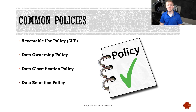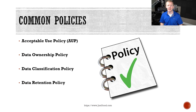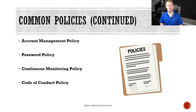Here are some common security policies you might see. The acceptable use policy, or AUP, defines permissible use of networks and systems. The data ownership policy states who owns what information. The data classification policy describes the classification structure, which relates to how certain data is protected — for instance, proprietary or trade secrets get protected with a lot of controls. The data retention policy defines how long certain types of data need to be retained before being destroyed. The account management policy describes the life cycle of an account from onboarding to offboarding. The password policy sets the required length, complexity, reuse, and other password requirements. The continuous monitoring policy defines the company's approach to monitoring and notifies users when they're subject to it. And the code of conduct or code of ethics policy describes expected behavior from employees.